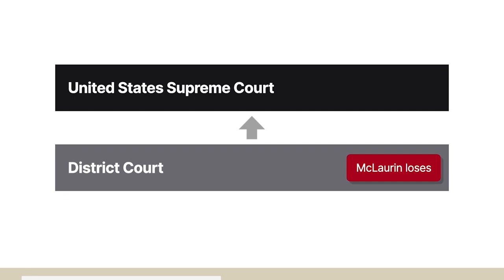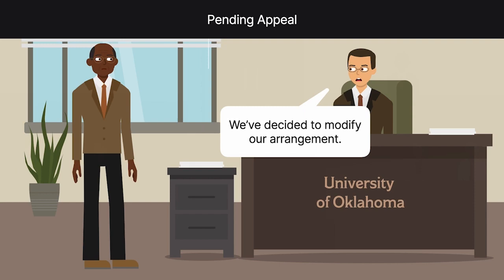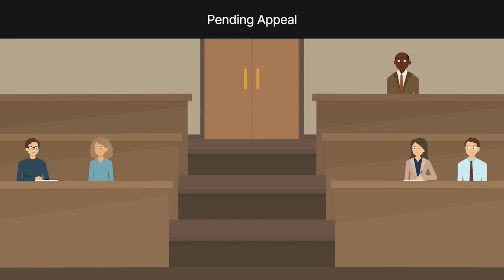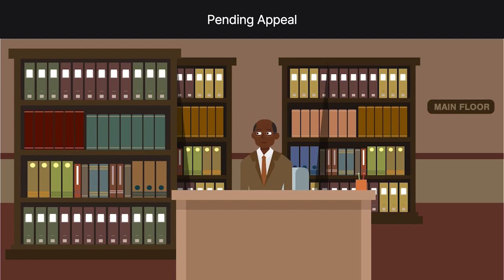While the appeal was pending, the university improved its treatment of McLaurin, but only slightly. Instead of being forced to sit outside the classroom, he was allowed to sit inside the room in a row designated for Black students. He was also allowed to use a designated table on the main floor of the library, and he was allowed to eat at the same time as other students, as long as he sat at a separate table.